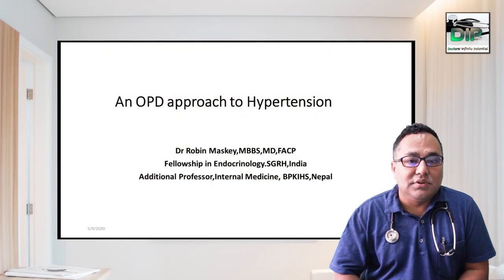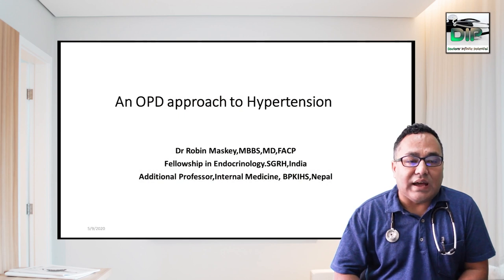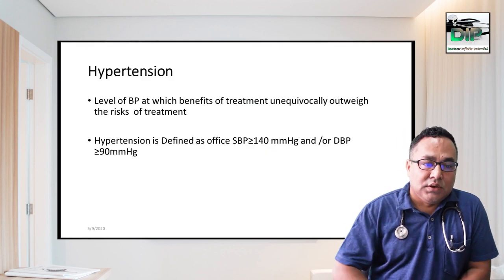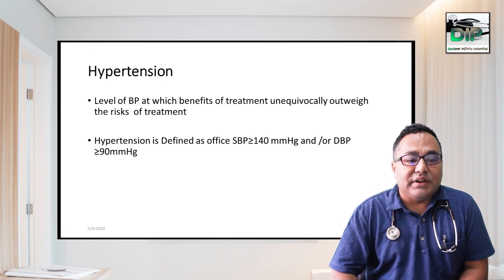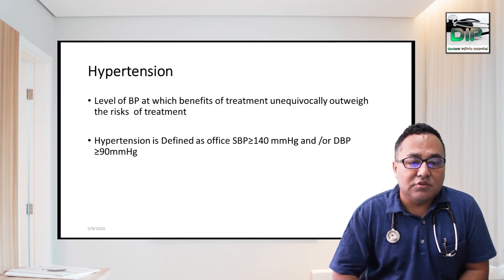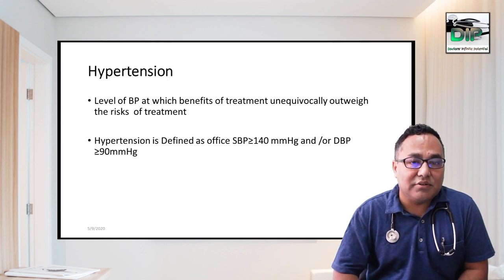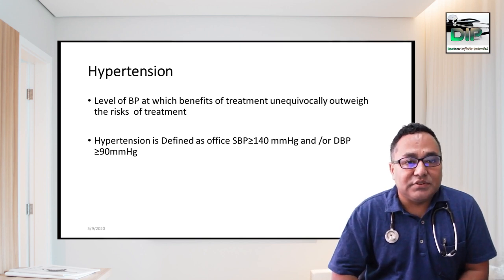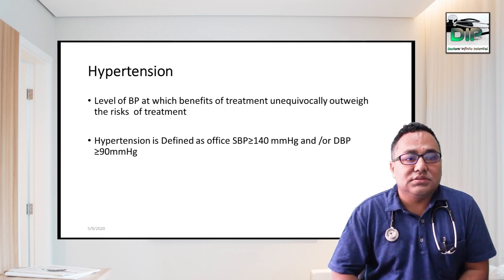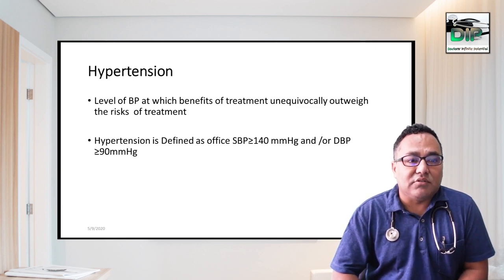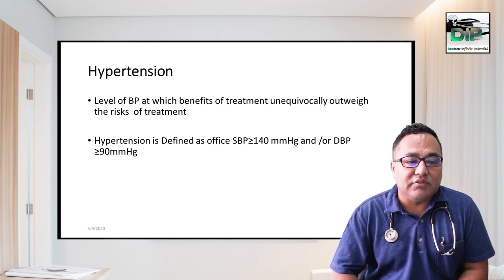Good morning everyone. Today I am going to talk about an approach to patients with hypertension, especially in the outpatient department. Hypertension is defined as office systolic blood pressure more than or equal to 140 mmHg and diastolic blood pressure more than or equal to 90 mmHg. You should always treat hypertension to prevent its complications rather than worry about the risks of the drugs. We have to outweigh the benefits over the risks of treatment.